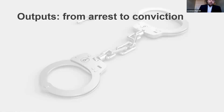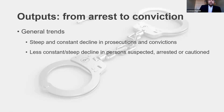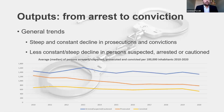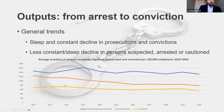Moving to the outputs: looking at the journey from arrests to conviction, there is a general decline in prosecutions and convictions across all countries, but a less steep decline in persons arrested, cautioned, or suspected. This means there may be less efficiency in prosecuting or convicting, or increasing numbers of arrests. As visible in the visualization, the curve of prosecutions is much steeper downwards, whereas arrests and suspected persons stay more constant over time.